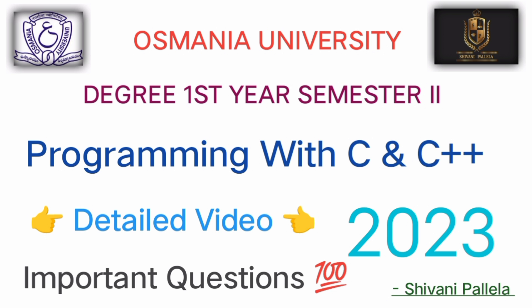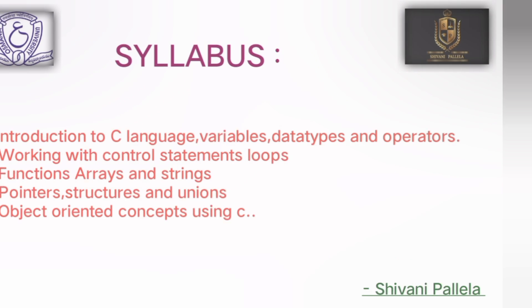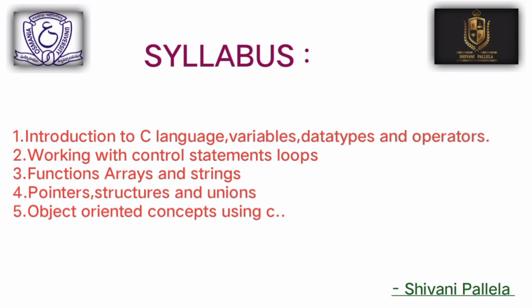First, you have the syllabus. You have a total of five units in the C and C++ subject. This is only for computer application students. You also have the subject of banking and financial services, as well as programming with C and C++. These five units can have both long and short questions examined.